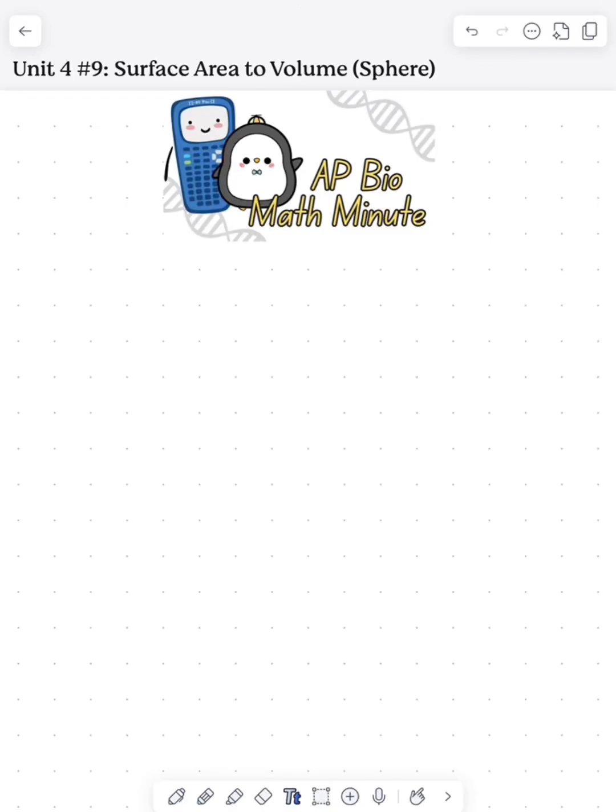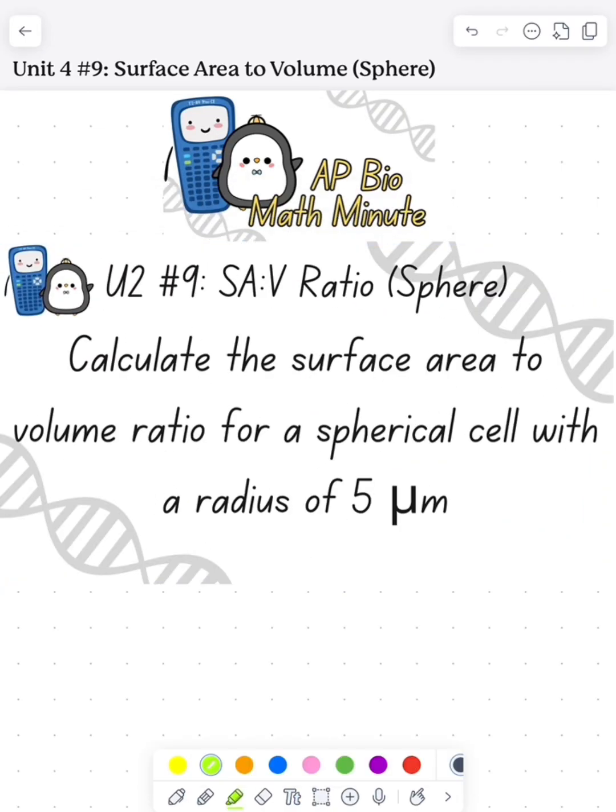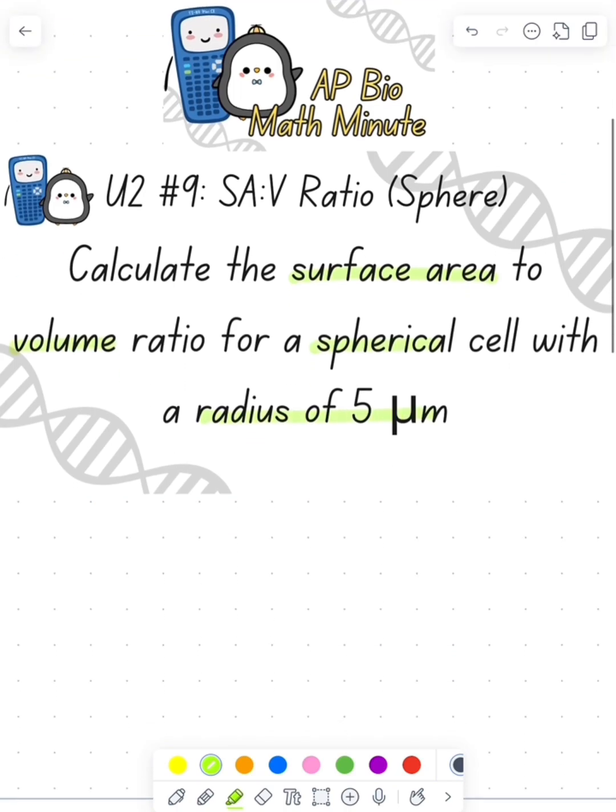What's up, AP Bio students. Today I'm going to do an AP Bio Math Minute looking at surface area to volume ratio of a sphere. We need to calculate the surface area to volume ratio of a spherical cell that has a radius of 5 micrometers.